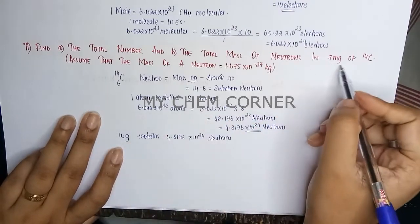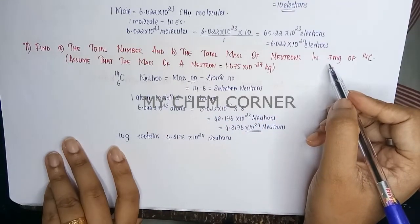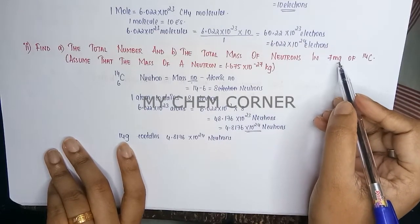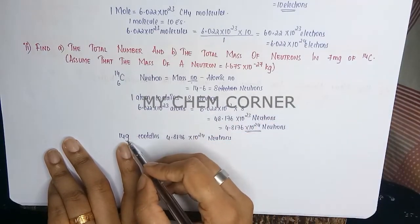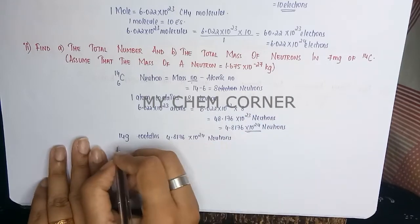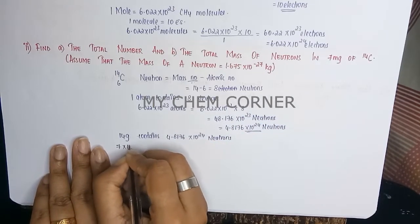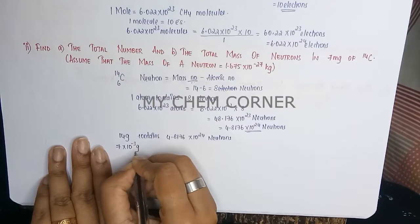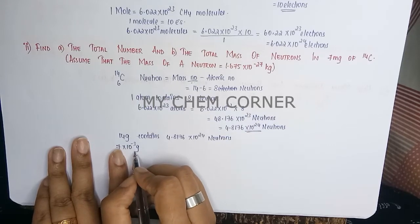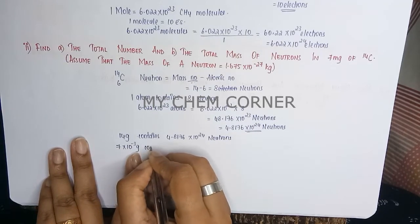Therefore how many are present in 7 milligrams? But here it is grams and this is 7 milligrams, so first we need to show a conversion. When you have milligram to gram, it is 10 to the power minus 3 grams. So 7 milligrams to grams is 7 times 10 to the power minus 3 grams. This much contains...